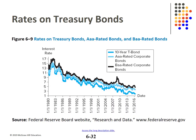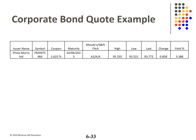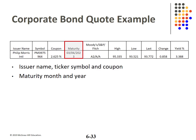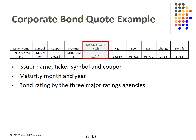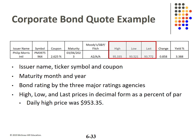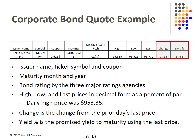This graph shows the rates on 10-year Treasuries (the medium blue line, the lowest), AAA-rated corporate bonds (the lighter blue middle line), and BAA-rated corporate bonds (the black line). The rates move pretty much together, with lower-rated debt paying higher rates. For a corporate bond quote: issue name, symbol, and coupon rate; maturity date; bond rating from each of the three major agencies; high, low, and last — closing prices quoted as a percent of par; the change from yesterday's closing price; and the promised yield using the last price.